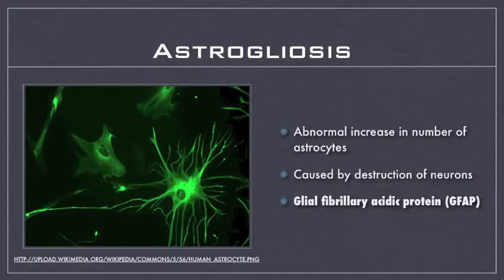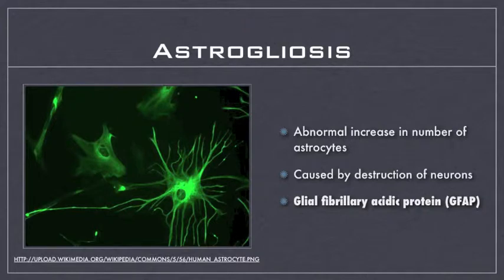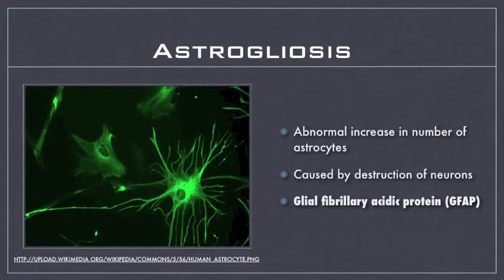Now we should discuss astrogliosis. Astrocytes are another type of neuroglia. For our purposes, astrocytes help provide nutrient support to neurons, and astrogliosis simply refers to when there is an abnormal increase in the number of astrocytes, which is a typical response to a decrease in neurons in the body due to neurotoxins and such. Like with myelination, we can ask how we quantitatively measure astrogliosis. This is through the expression of glial fibrillary acidic protein, or GFAP for short. The greater the number of astrocytes present, the greater the expression of GFAP.